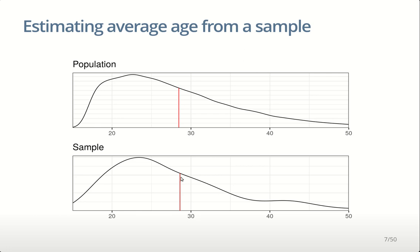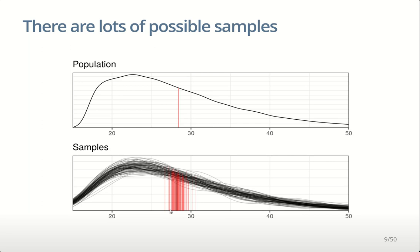Perhaps we took a different sample — here's a second sample that differs from the first one. Because it differs, the sample mean also differs. Our first sample was a little bit higher than the truth, our second a little bit lower. As you take more and more samples, you get a distribution of sample means. There's quite a bit of variation in the samples themselves, but much less variation in the sample mean. The sample means are centered around the truth: sometimes a little high, sometimes a little low, but on average bang on. The amount of variation depends on the variation in the population and the sample size.